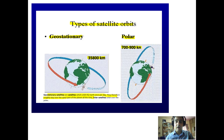Polar orbiting satellites orbit from the north pole to the south pole. While the satellite is taking rounds around the earth, the earth itself is rotating, so every time the satellite completes one orbit it takes a picture of a different area because of the earth's rotation.